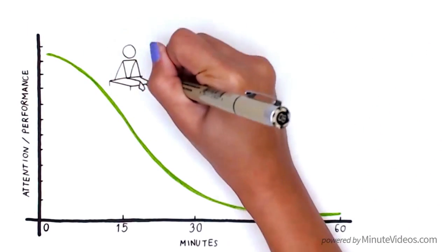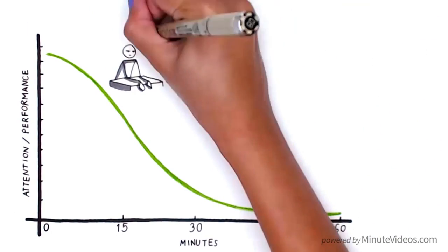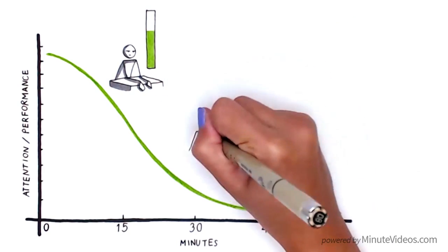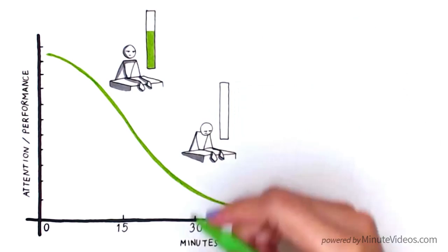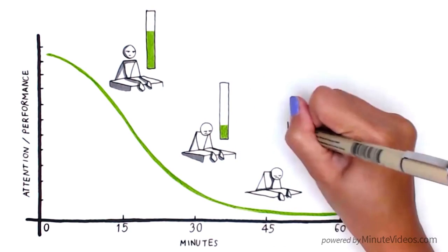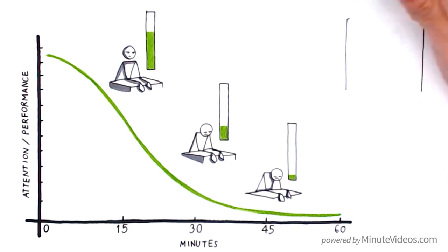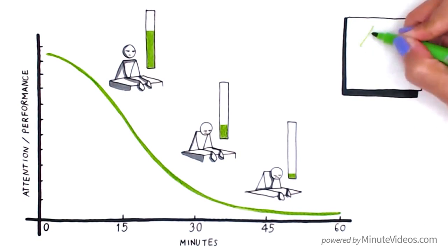Research suggests that students' attention reduces dramatically about 15 minutes into class. Within 30 minutes, it is often as low as 20% of the original level, and after 45 minutes, it's almost entirely gone. Given that we spend up to 12 years in school,